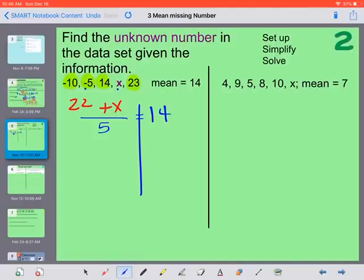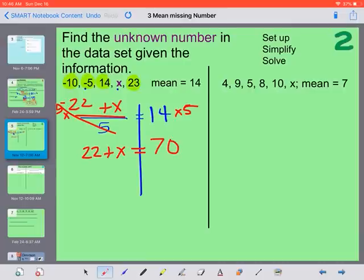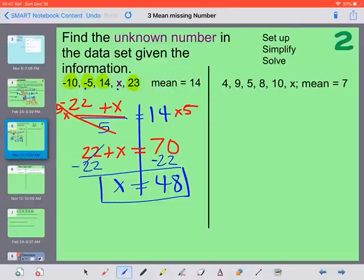So negative 10 plus negative 5 plus 14 plus 23 gives us 22. So now we need to solve this to figure out what is the unknown number. So first the opposite of dividing by 5 would be multiplying by 5. 5 divided by 5 eliminates, so we have 22 plus x. 14 times 5 is 70. And then the opposite of a positive 22 would be negative 22. So our missing number, in order to have a mean of 14, would have to be 48. Big number.